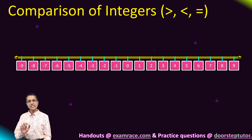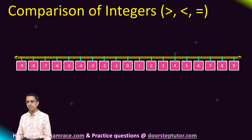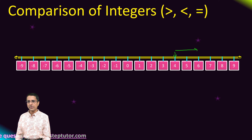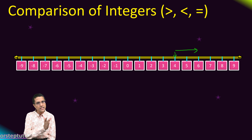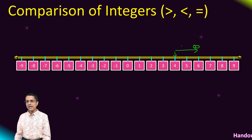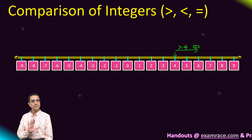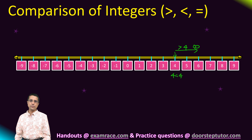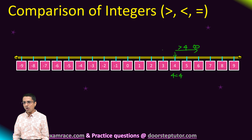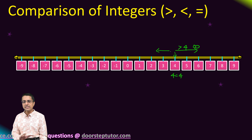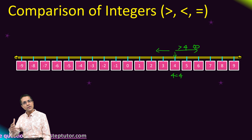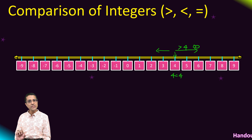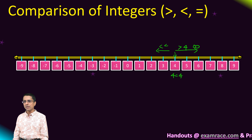Let's start with a simple example — consider the number 4. All numbers to the right of 4, that is 5, 6, 7, 8 till infinity, are actually greater than 4. The number 4 is equal to itself. All numbers to the left of 4, that is 3, 2, 1, 0, minus 1, minus 2, till minus infinity, are actually less than 4.